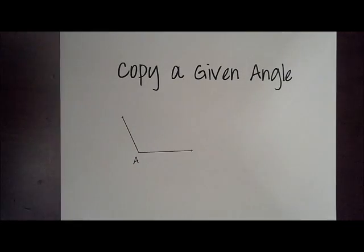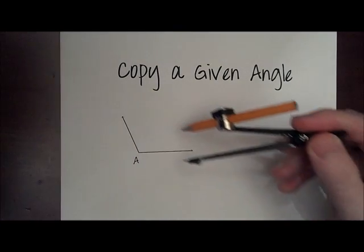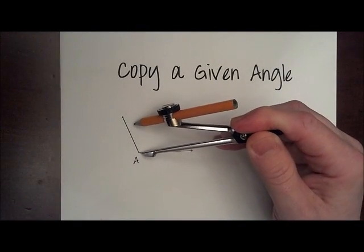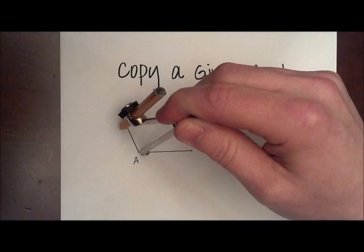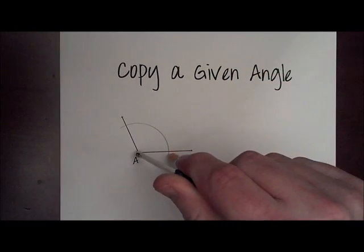Hey folks, back again. This is the second construction in our review: copy a given angle. You're going to take your compass and open it to a convenient opening, just so that when we strike an arc it will cross both sides of that angle.